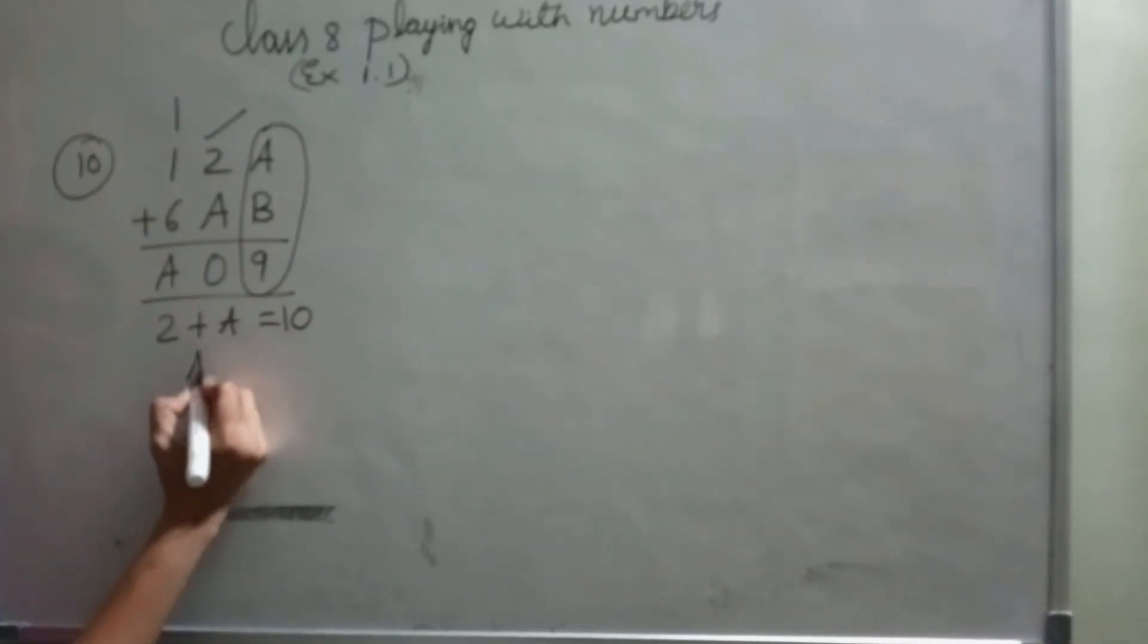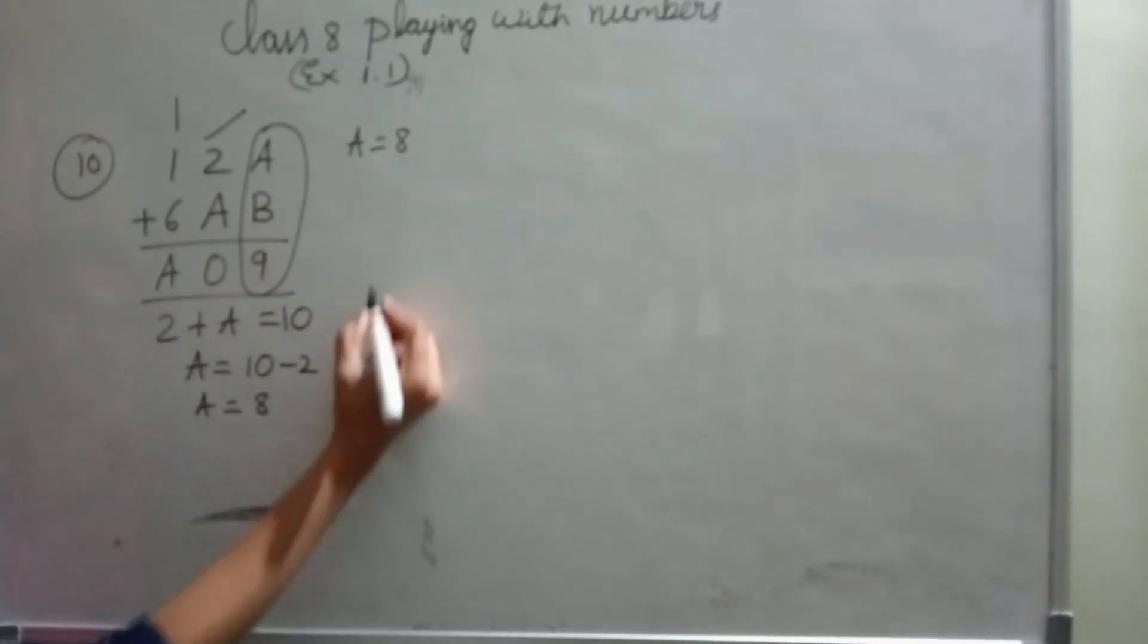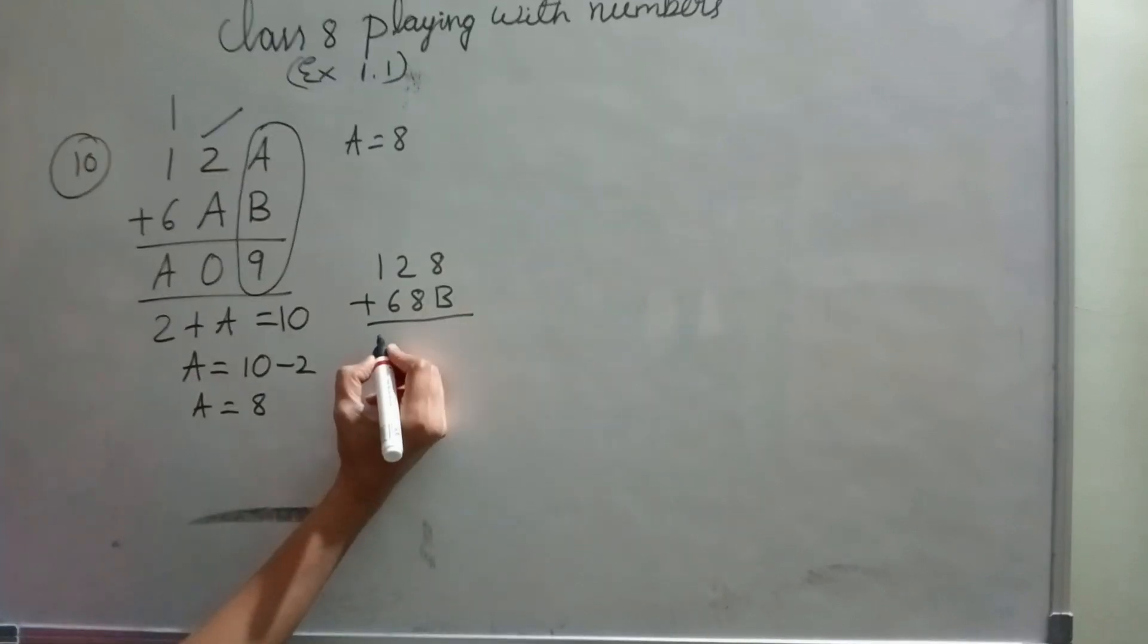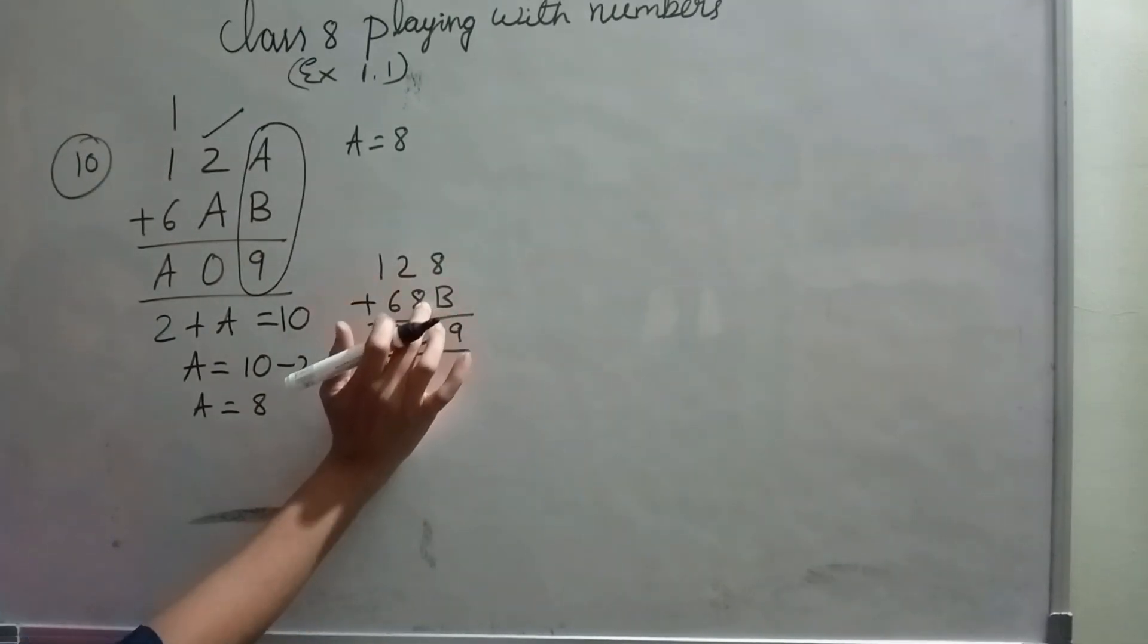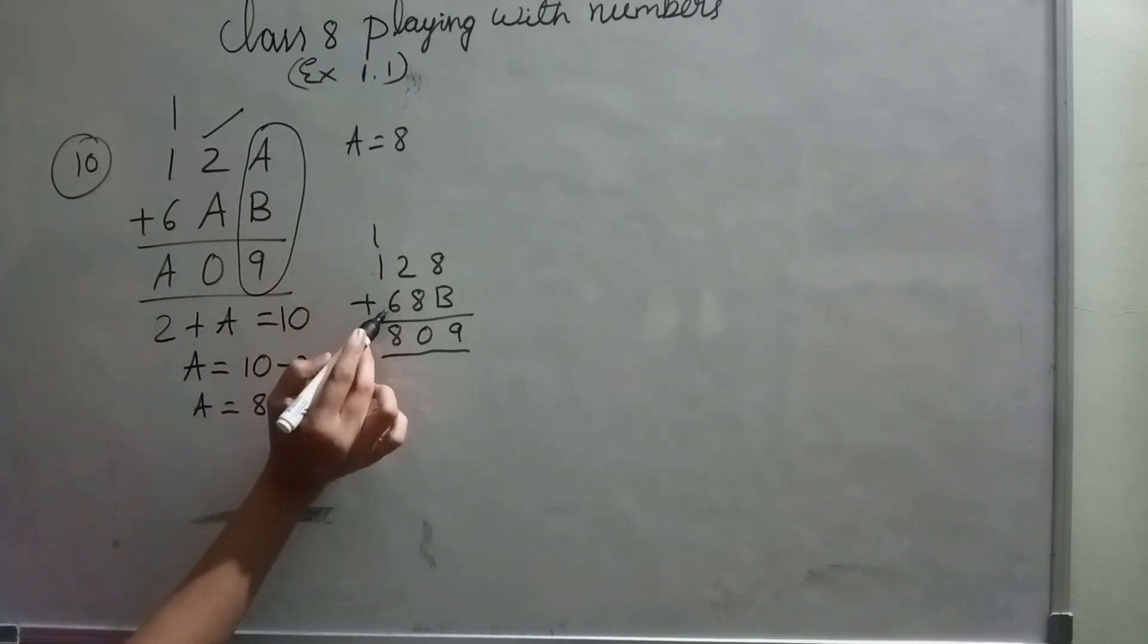1 carry. A equals 10 minus 2. A equals 8. So I got A equals 8. Let's check. 128 plus 68B equals 809. This side I don't know. 2 plus 8 is 10. 1 plus 1, 2. 2 plus 6, 8. It's correct. A equals 8.